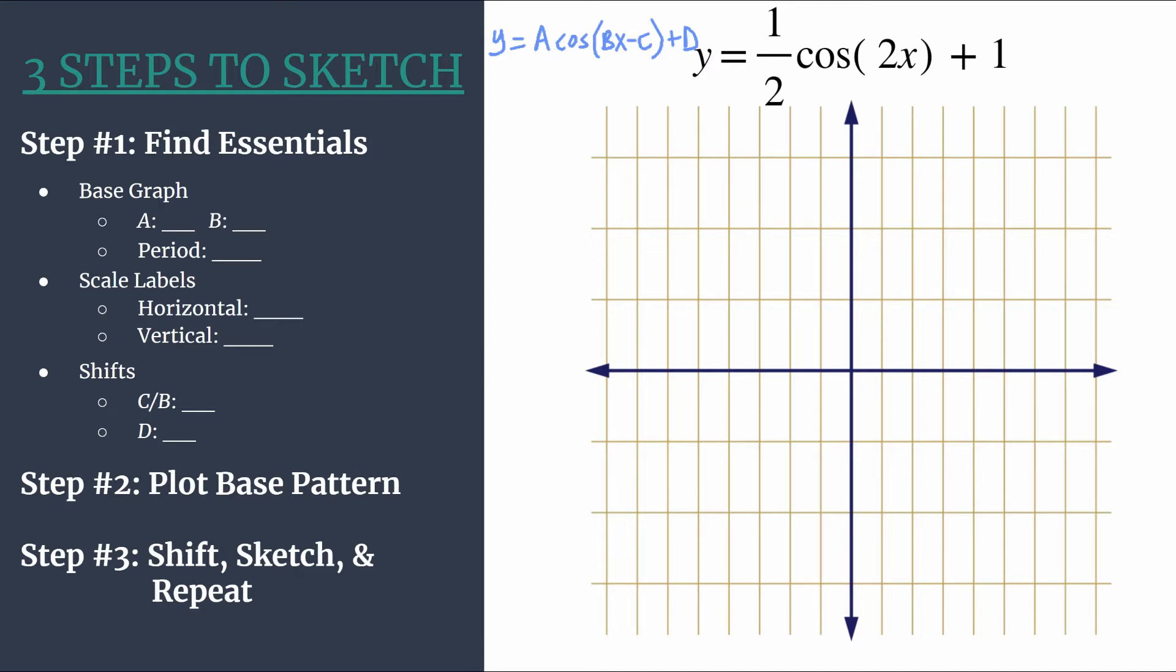Let's start with step one: find the essentials. We're first going to work on our base graph so we'll identify a and b. We see a is the coefficient in front of cosine, that'll be 1/2. So our amplitude is 1/2. That's the distance from the midline of the graph to a maximum or to a minimum.